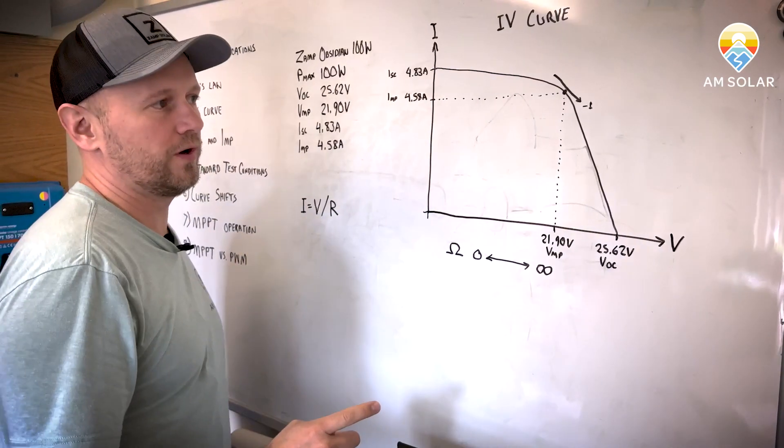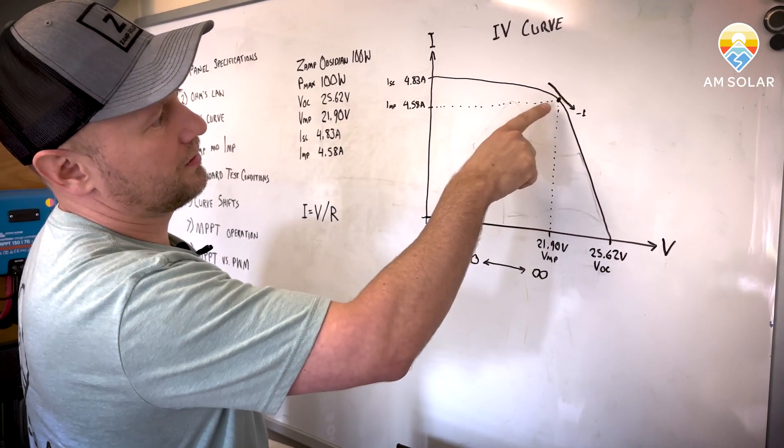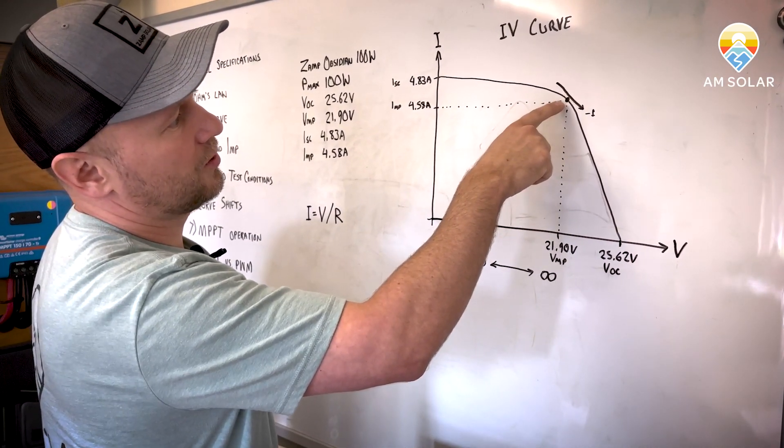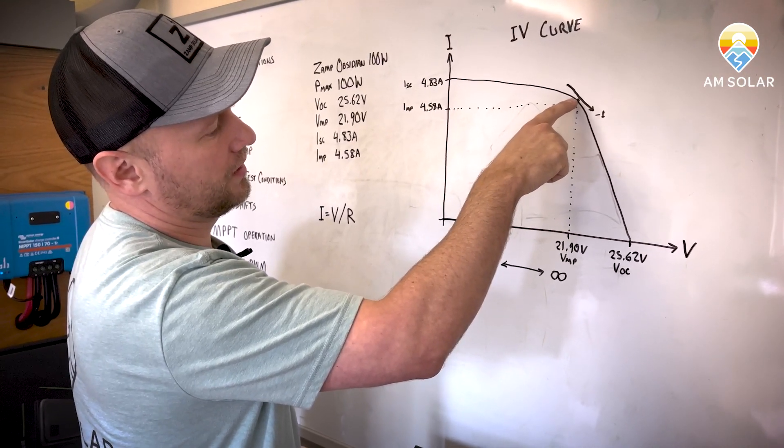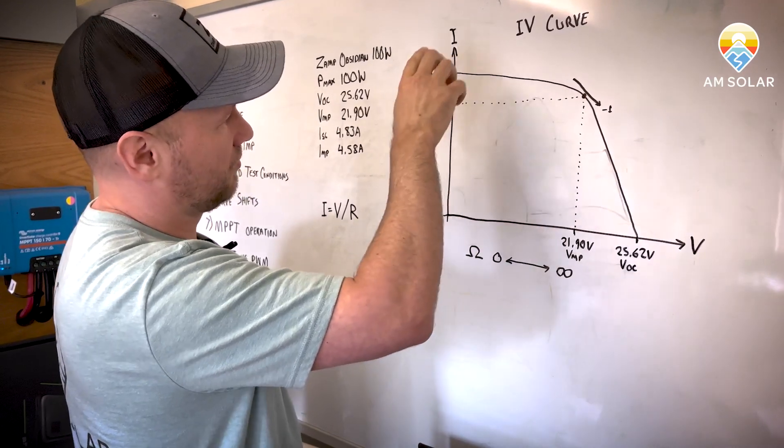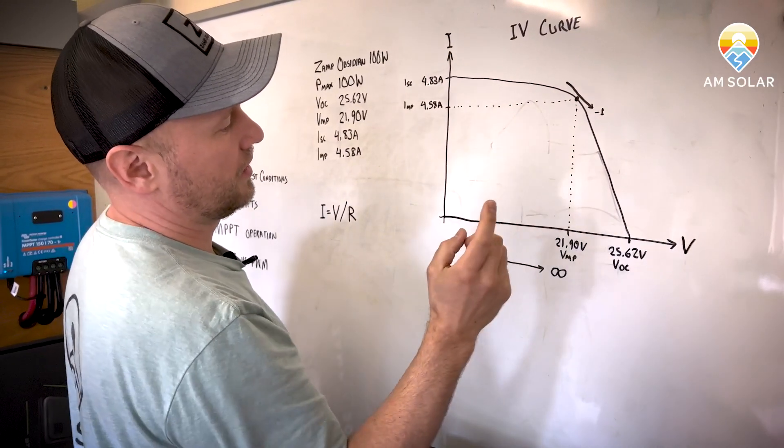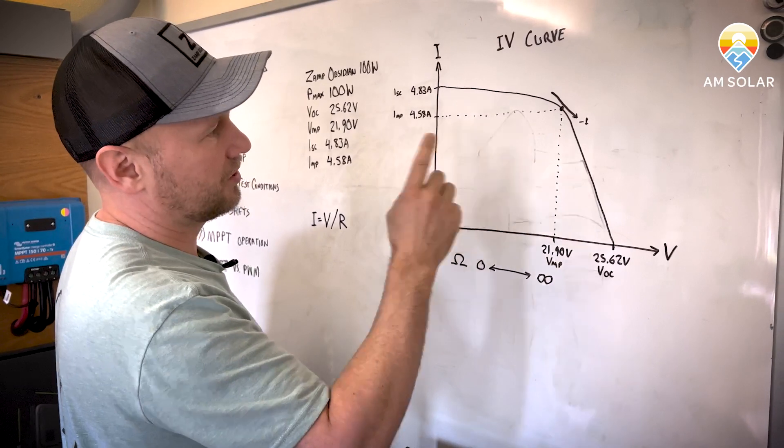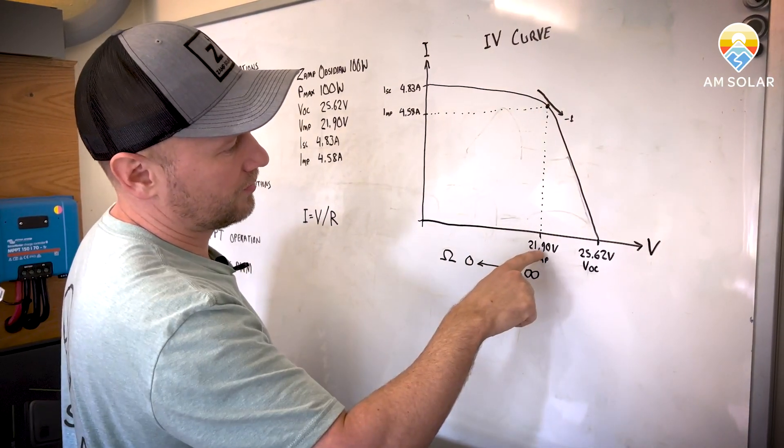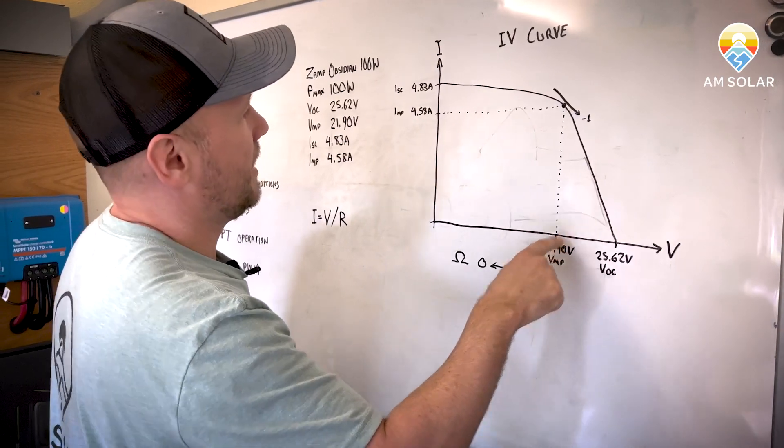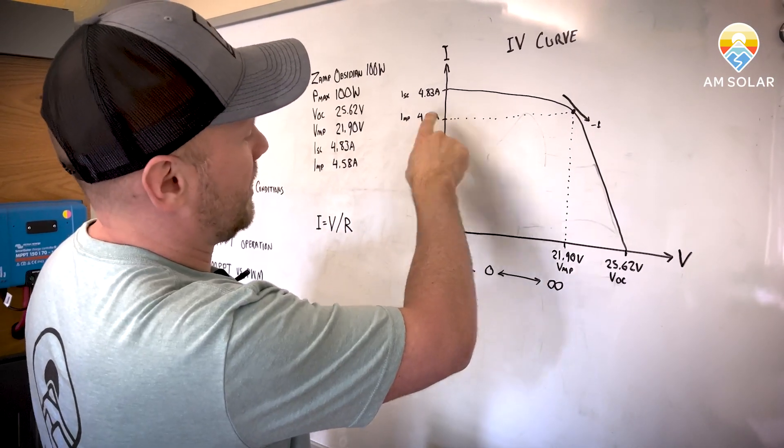An important point right here is where that dogleg happens. And that's where the slope is exactly negative one. And at that point, the combination or the voltage times current, which is power is the greatest number. So that is 21.90 volts and 4.58 amps.